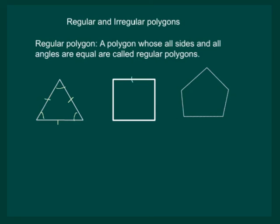Similarly, in a square, all the sides are equal and all the angles are 90 degrees and they are equal. Similarly, in a pentagon, all the sides are equal and all the angles will be equal.